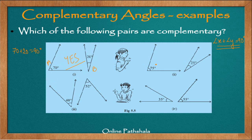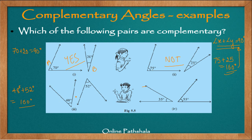Now the second example says 75 degrees and 25 degrees. When we add both: 75 plus 25 comes down to 100 degrees. This criteria is not satisfied — angle X plus angle Y, that is 75 plus 25, is not equal to 90. It is greater than 90. Therefore these two angles are not complementary. The third example has 48 plus 52. When I add 48 and 52, what we get is 100 degrees again. So these two angles, when added, are not equal to 90, and therefore they are also not complementary angles.